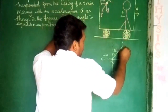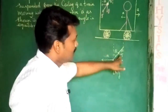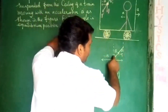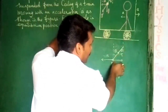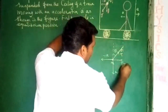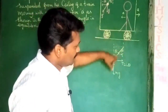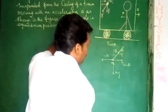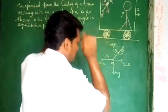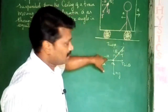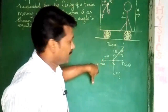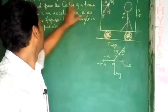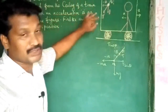The tension has two components: one is the horizontal component and the other is the vertical component. So the vertical component is T cos theta and the horizontal component is T sin theta. In equilibrium, the forces are balanced. The vertical component balances the weight mg, and the horizontal component relates to the acceleration.